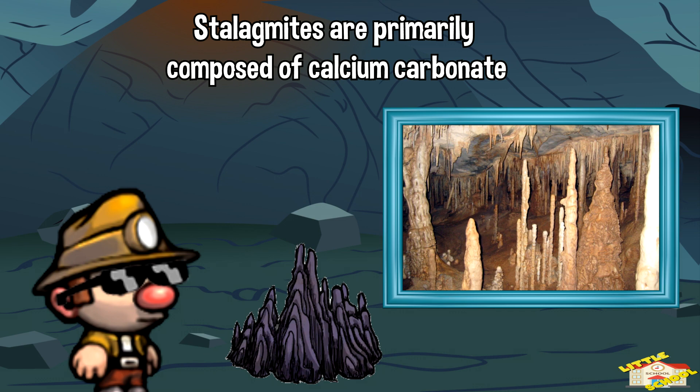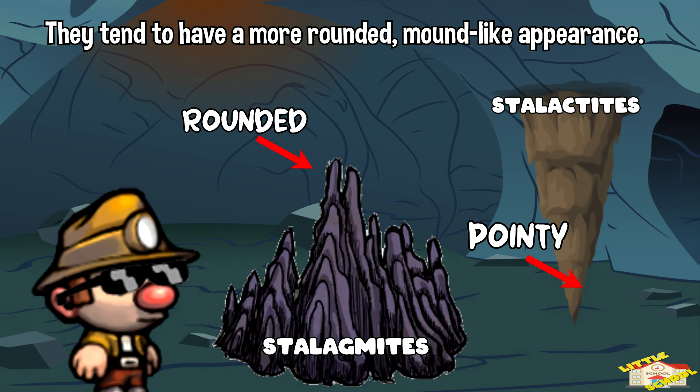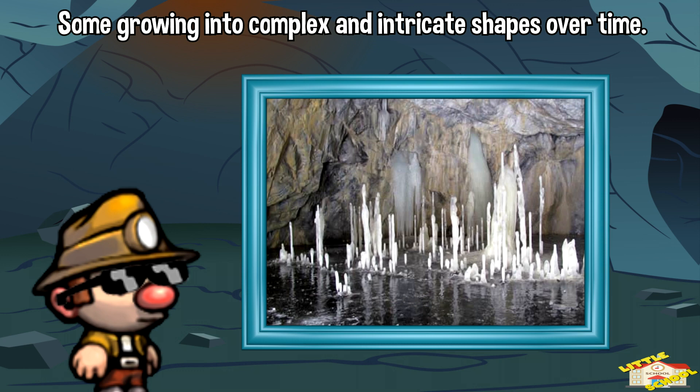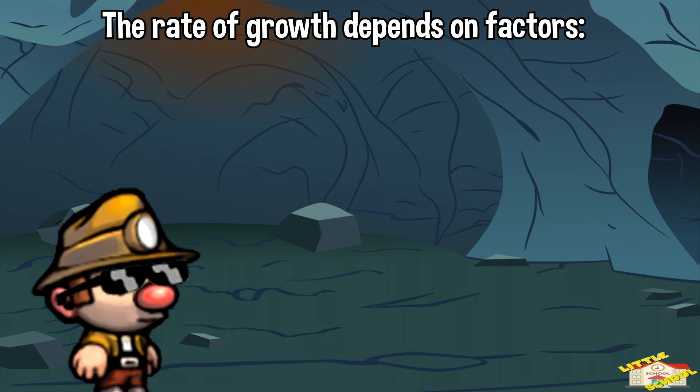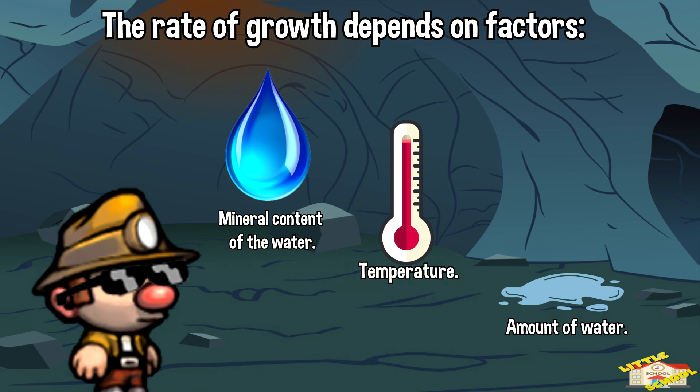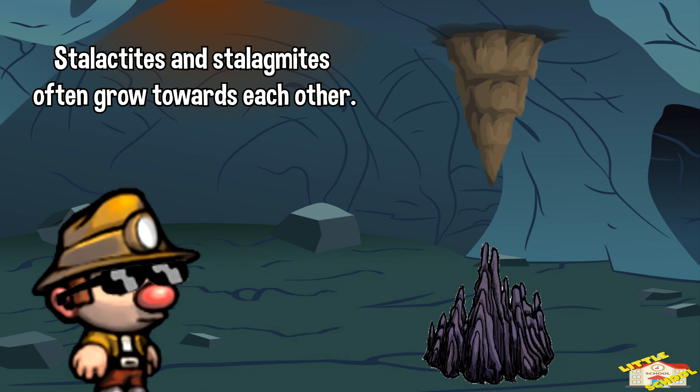Like stalactites, stalagmites are primarily composed of calcium carbonate. They tend to have a more rounded, mound-like appearance, and some grow into complex and intricate shapes over time. The growth of stalagmites is a slow process; the rate of growth depends on factors such as the mineral content of the water, temperature, and the amount of water entering the cave.